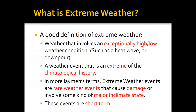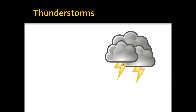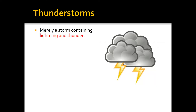The first extreme weather event we're going to talk about are thunderstorms. Not all thunderstorms are actually extreme — as a matter of fact, thunderstorms are very common in much of the United States. A thunderstorm is simply a storm that has rain falling out of it that contains lightning and thunder.